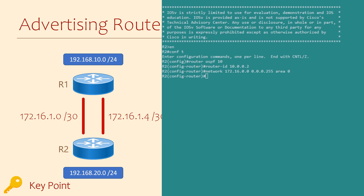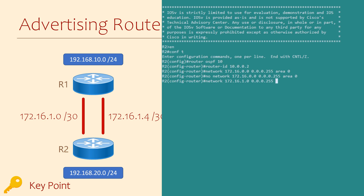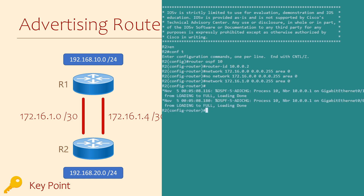I added the wrong network there. To remove that config, we enter the same command with a 'no' in front, then I'll add the right command. That looks better.